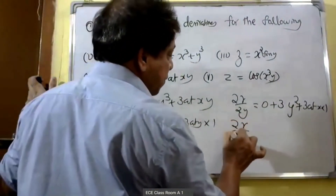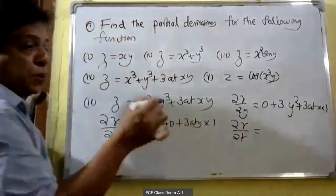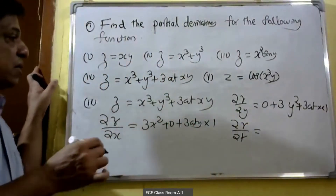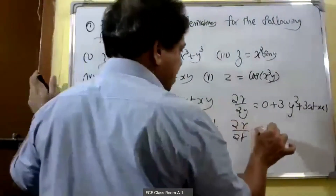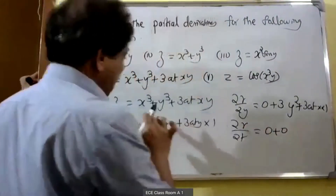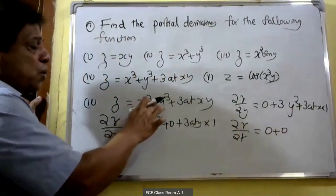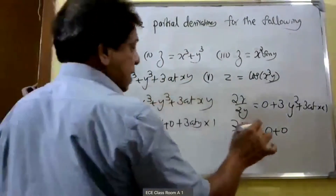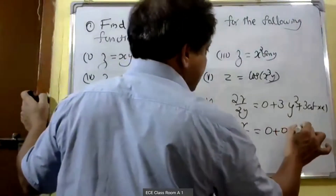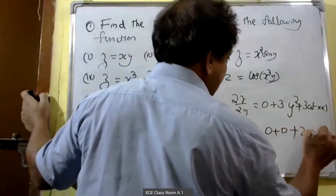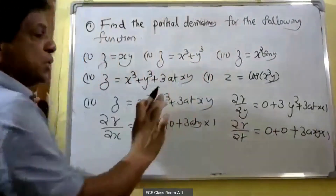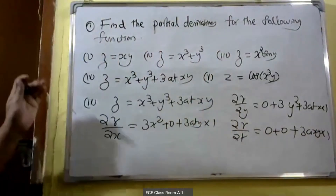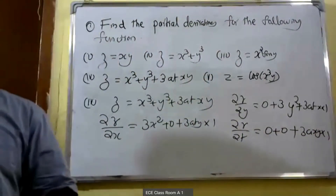For ∂z/∂t, when we partially differentiate with respect to t, x and y are constants. Therefore the x³ term gives 0, the y³ term gives 0. For the 3axy term, x and y are constants, so the derivative of t is equal to 1. Therefore ∂z/∂t is equal to 3axy.